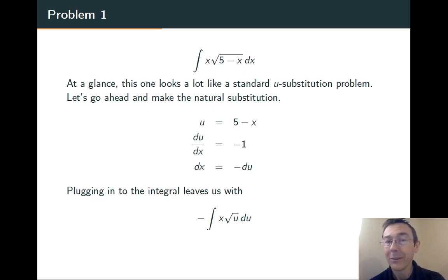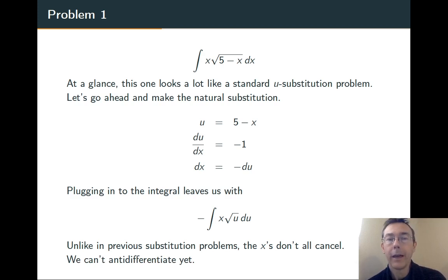Then we substitute in. We take out the 5 minus x, replace it with u. Take out the dx, replace it with negative du. So far, so good. The problem now is that we have an integrand that has both x's and u's. And that's a no-no. We can't integrate when we have more than one variable in there.